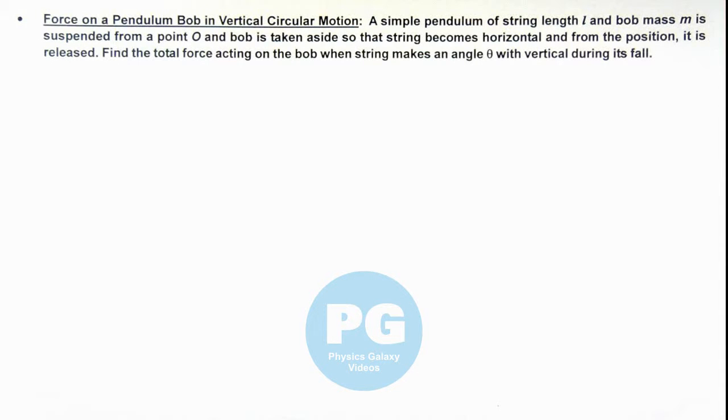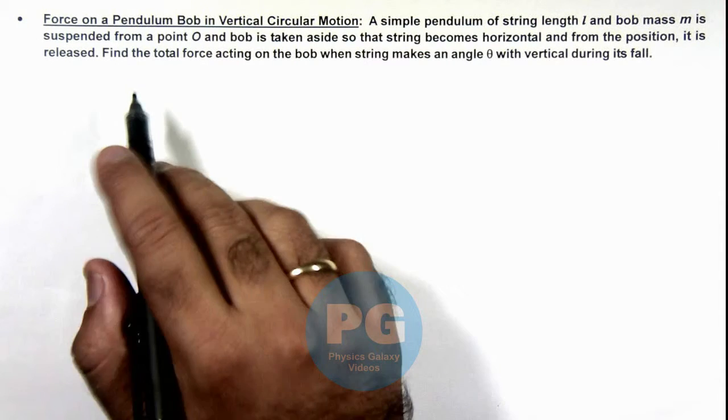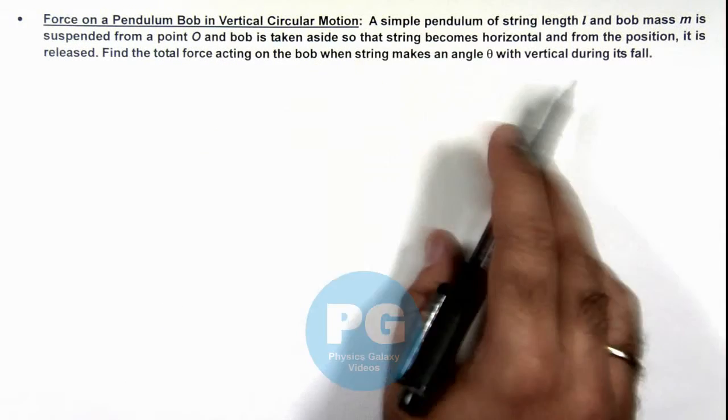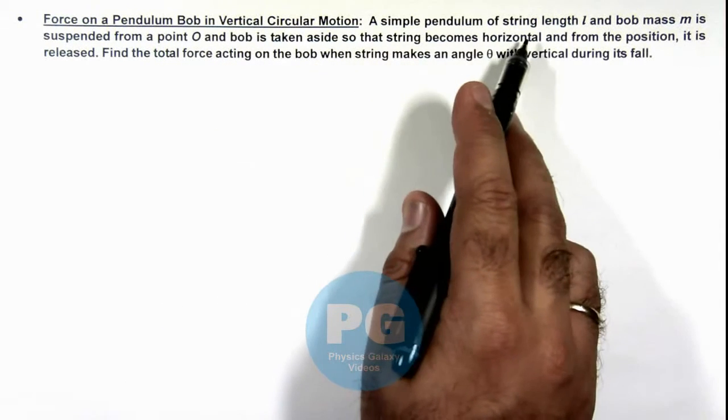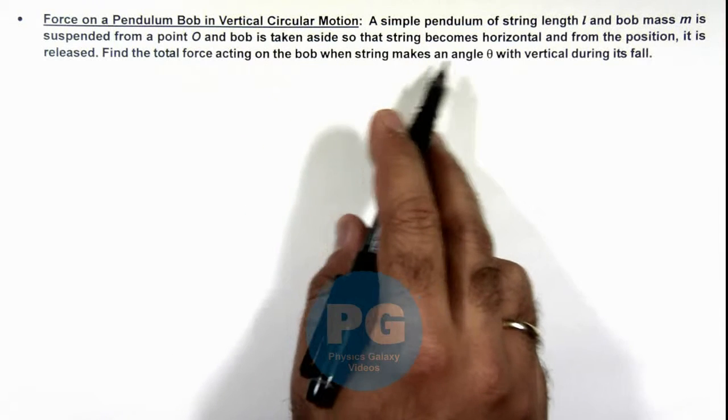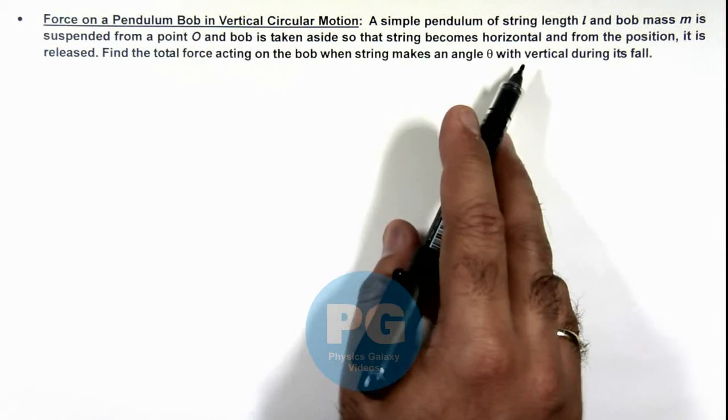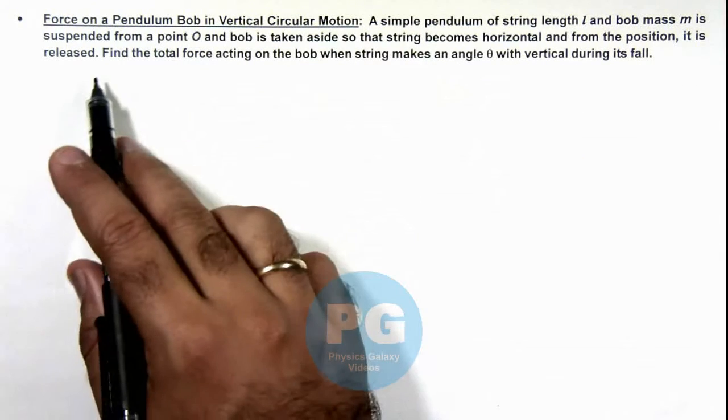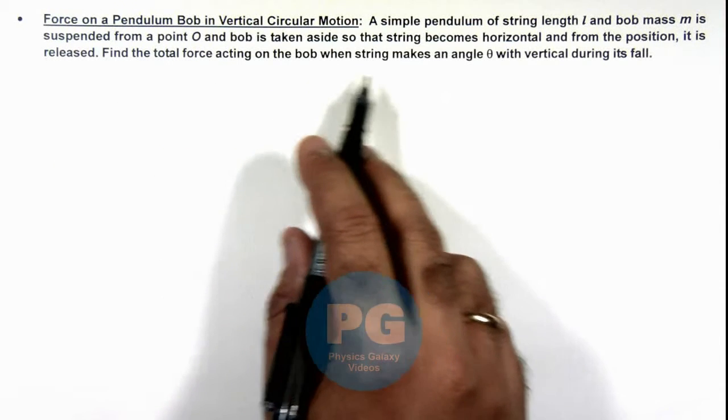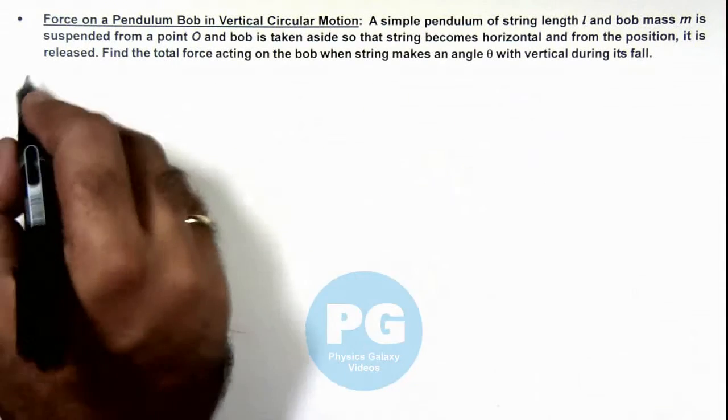In this illustration we'll discuss the force on a pendulum bob in vertical circular motion. Here we are given that a simple pendulum of string length l and bob mass m is suspended from a point O, and the bob is taken aside so that the string becomes horizontal. From this position it is released, and we are required to find the force acting on the bob when the string makes an angle theta with vertical during its fall.